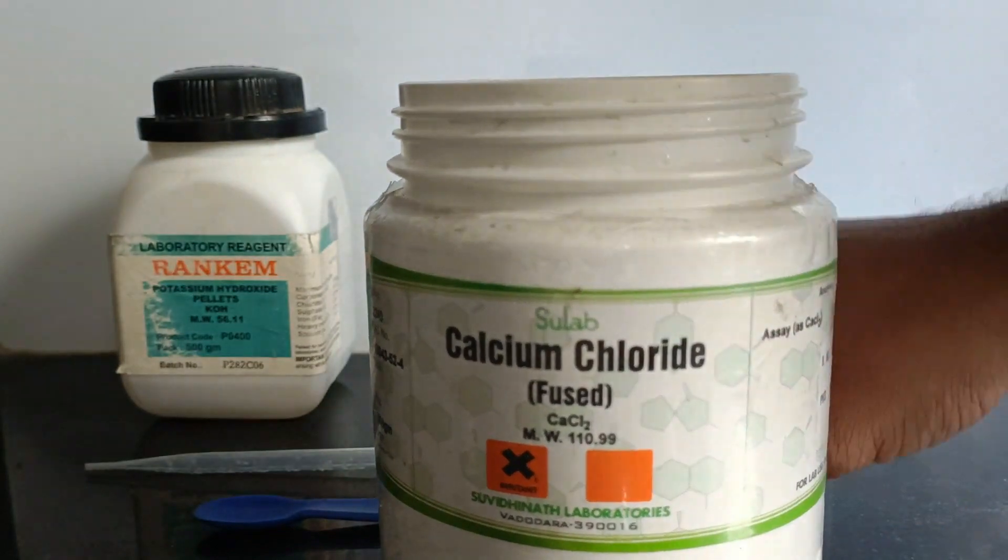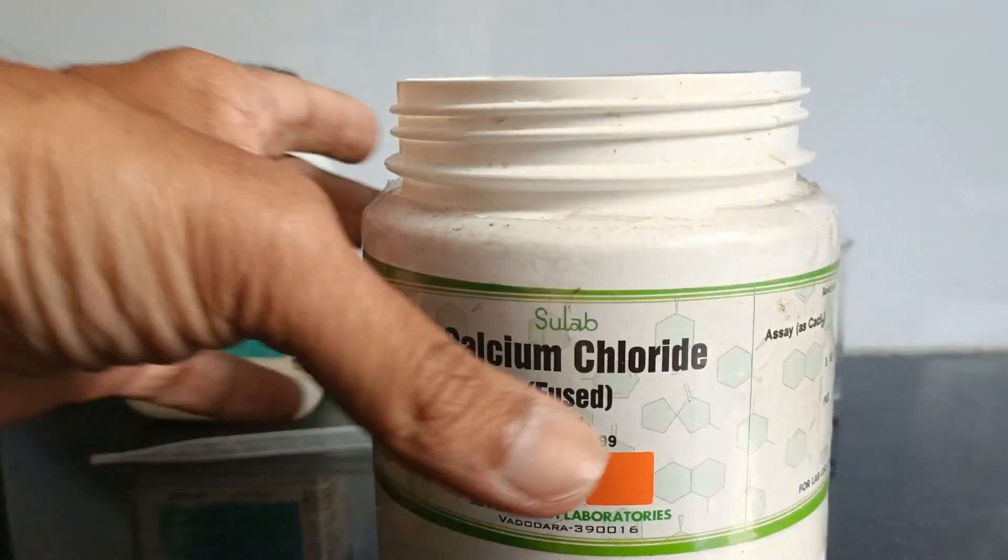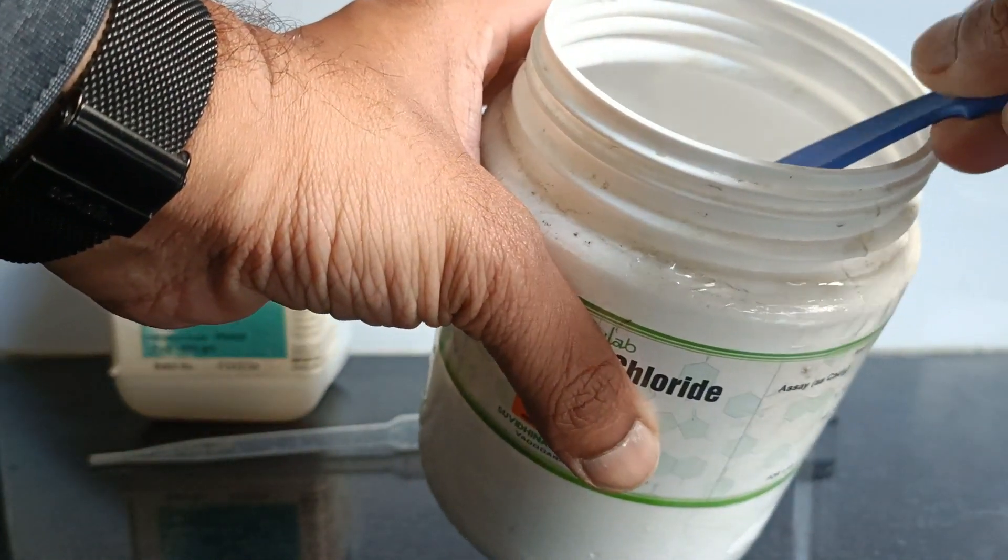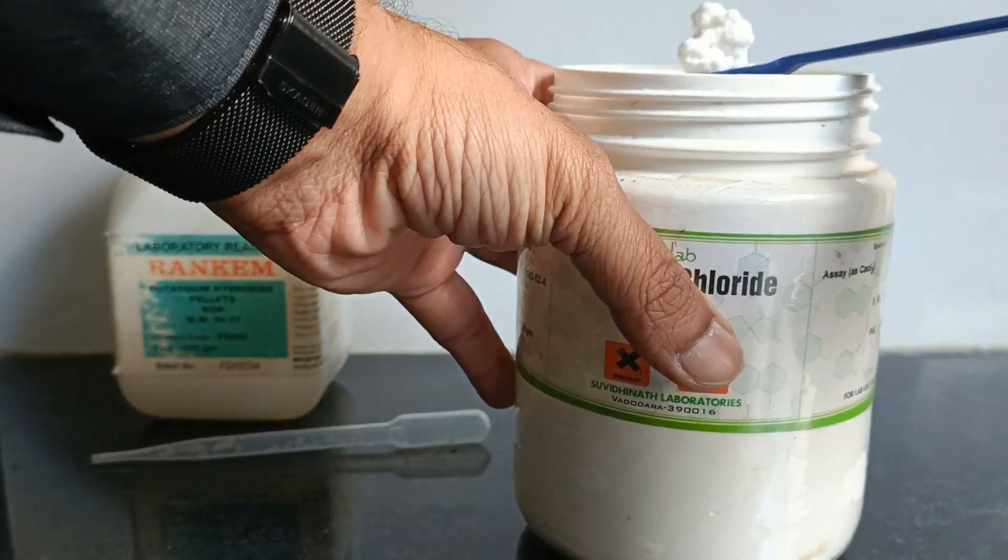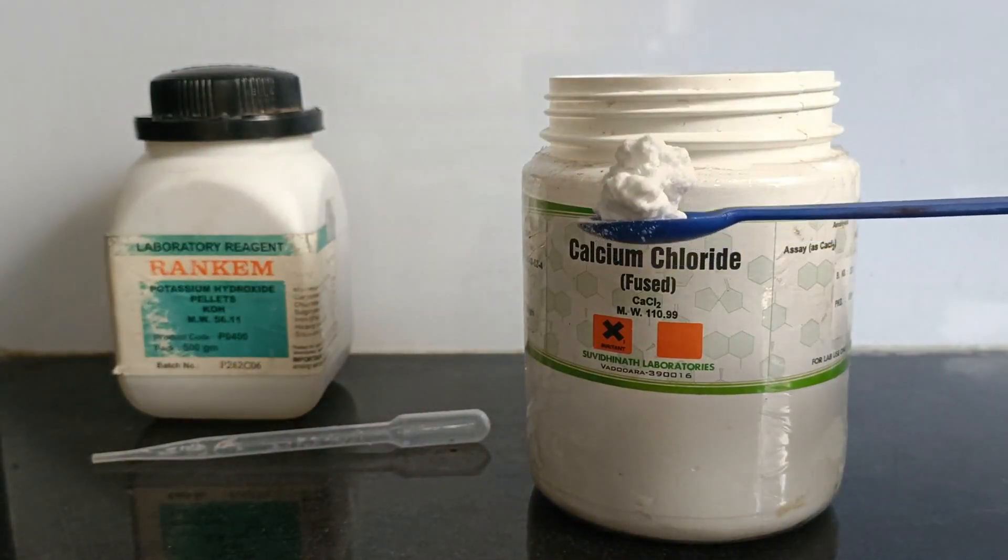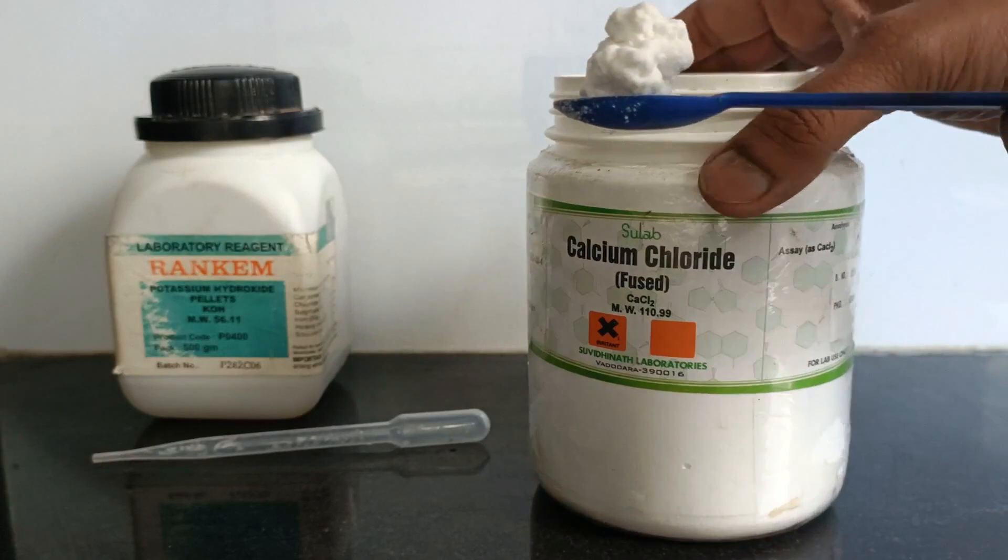This is written fused because it is anhydrous in nature, meaning no moisture content in it. I am going to take one piece of calcium chloride with the help of a spatula and add it into some water in a beaker.